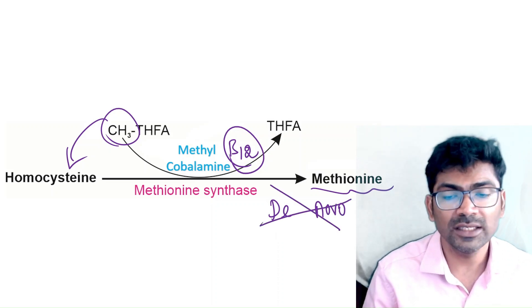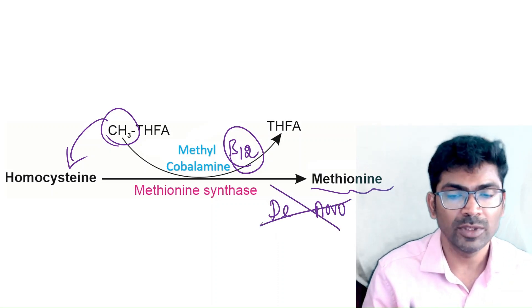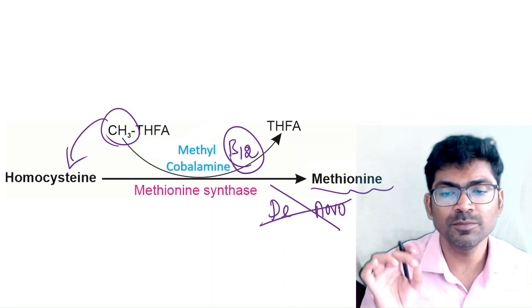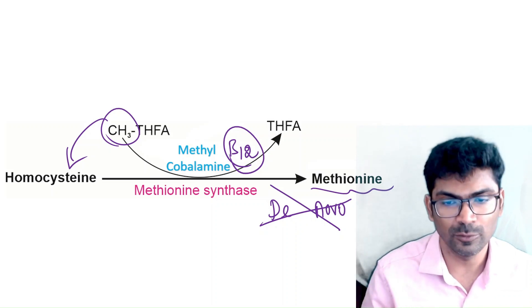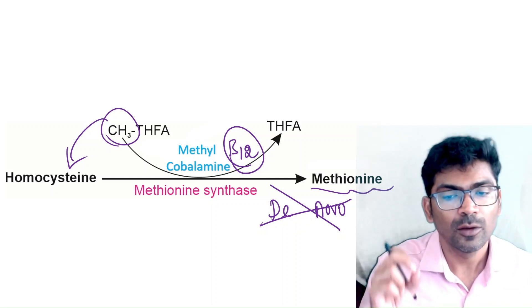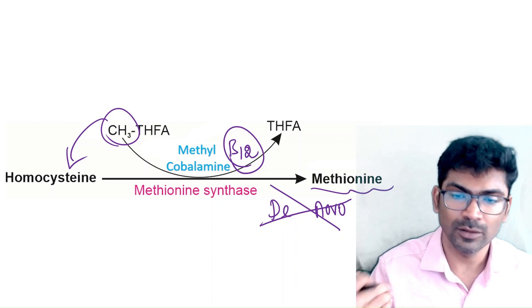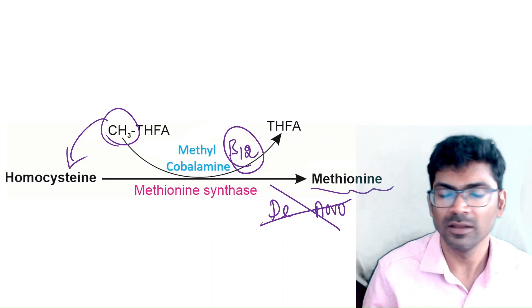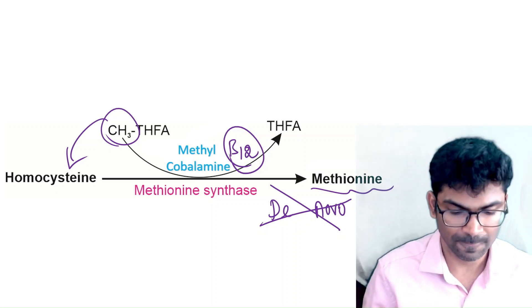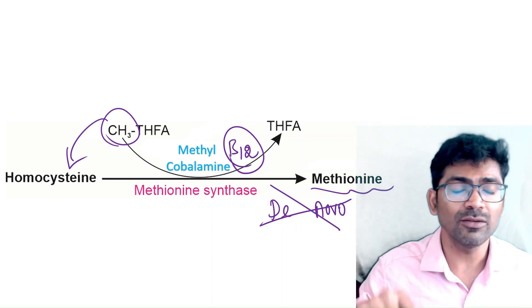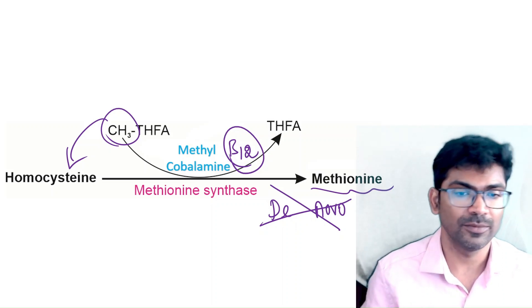That does not mean methionine can be produced de novo in the human body. Methionine is a dietary essential amino acid and cannot be produced from scratch. Now let us go back to the folate trap.